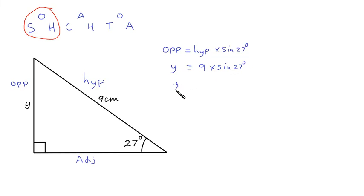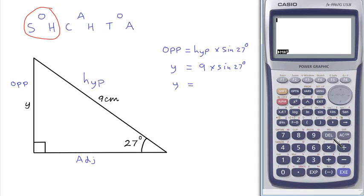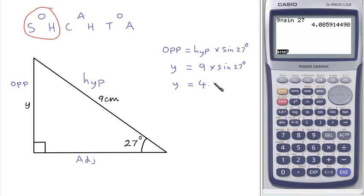Now we're ready to put this into the calculator to find Y. Simply type in 9 multiplied by the sine of 27. The answer is 4.085914498. I don't need it to be that accurate, so I'm going to round it to 4.1 centimetres, to two significant figures. Be careful to always include your units — they must be the same as the other units in the question, so centimetres in this case.